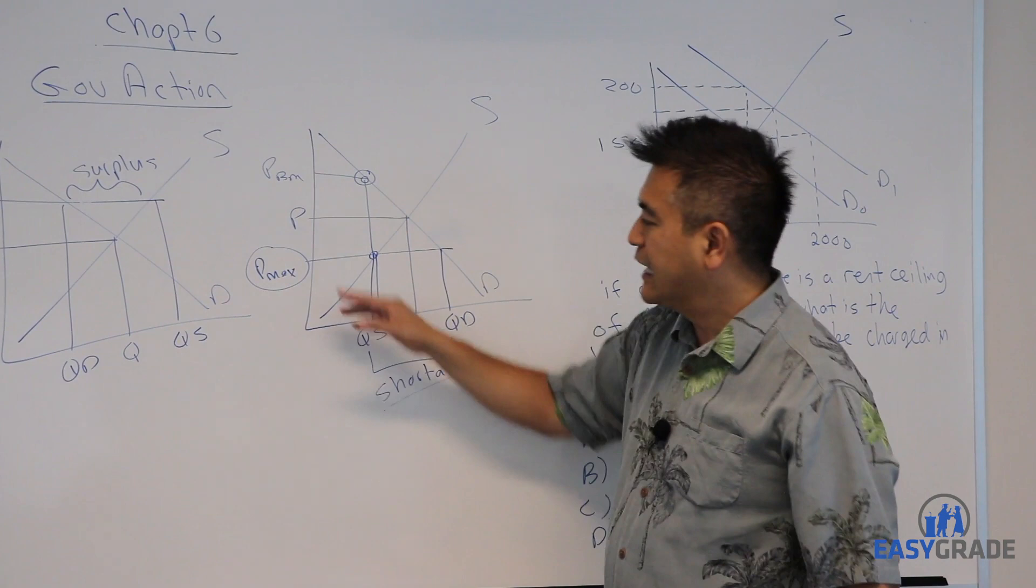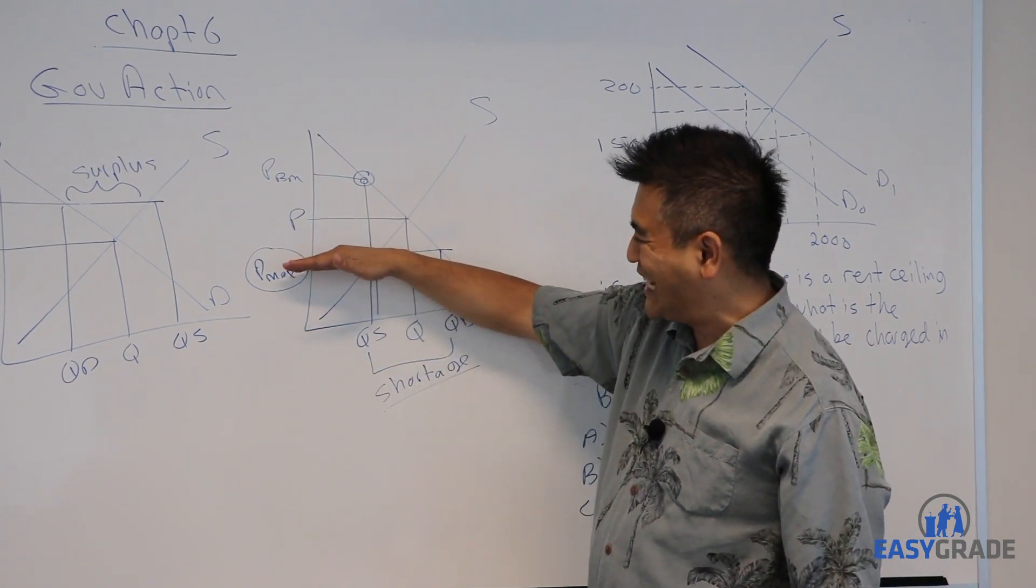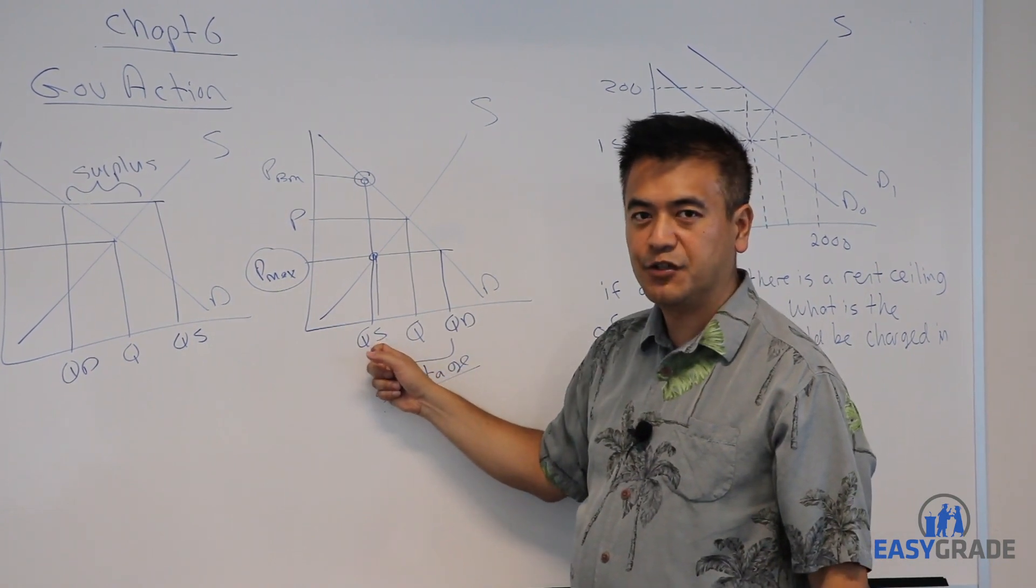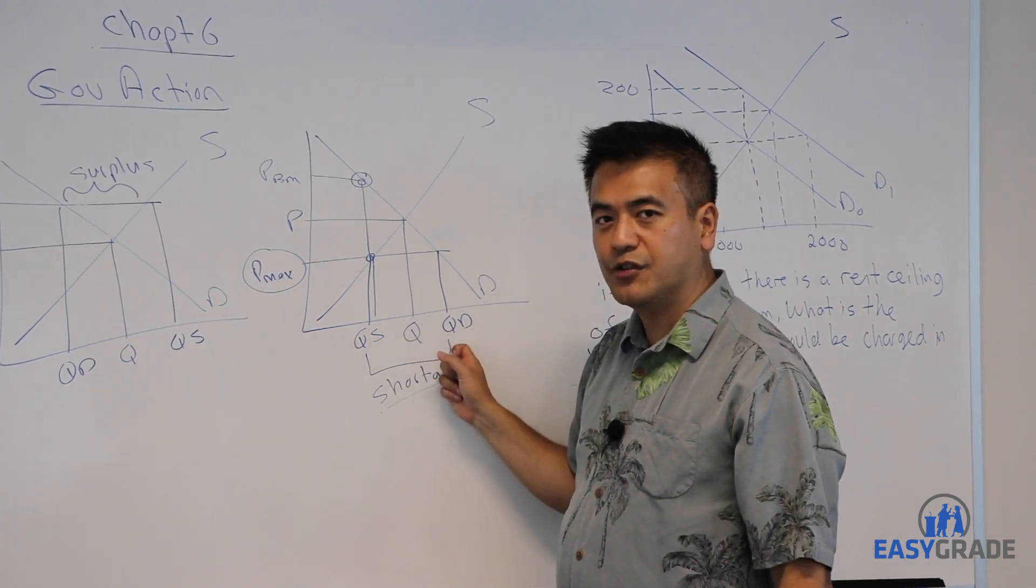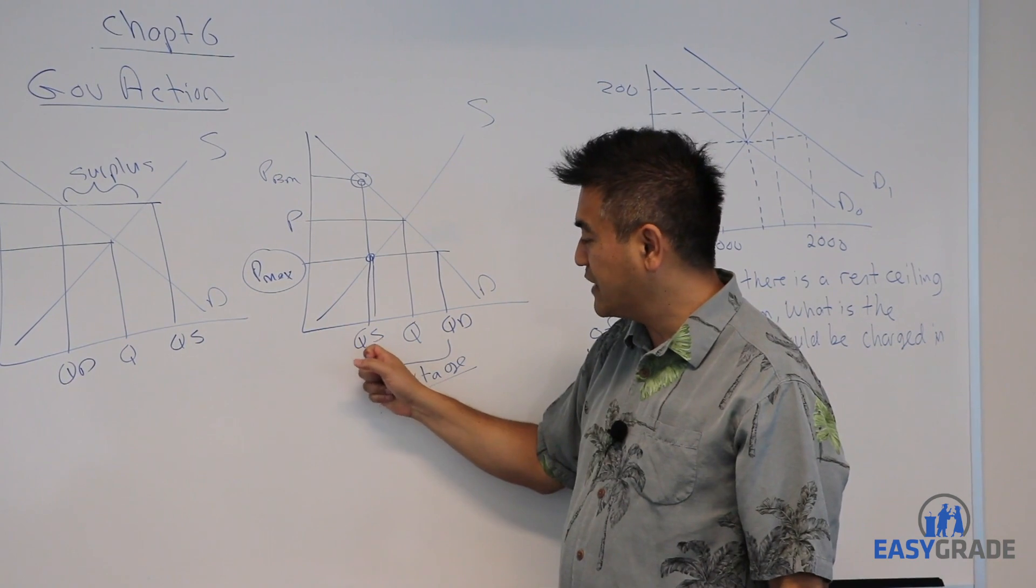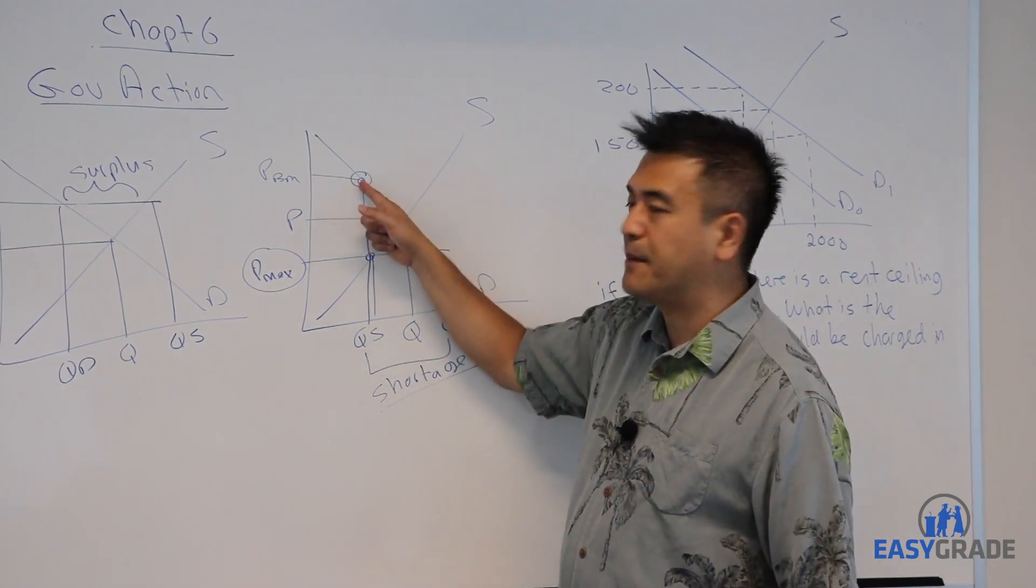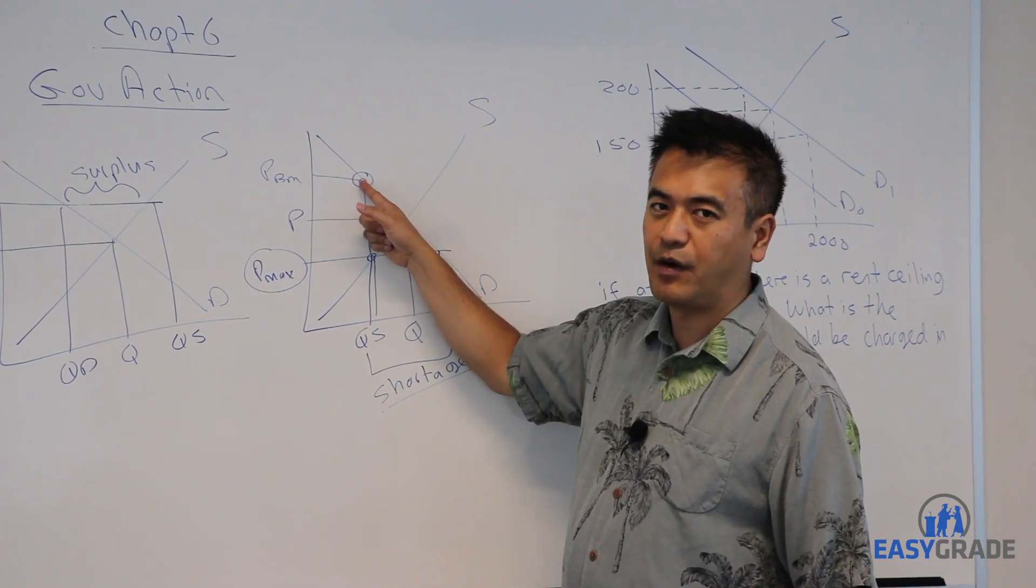Once again, if you set the price ceiling at this point, the units produced, supplied will be this much, and there'll be a shortage. What will happen is with these many units on the market, people are willing to pay that price there. That's the black market price.